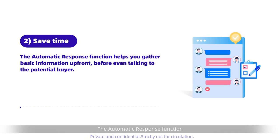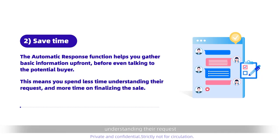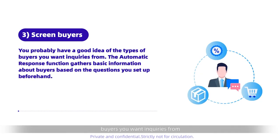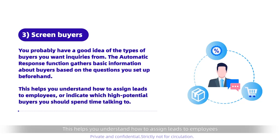Two, save time. The automatic response function helps you gather basic information up front before even talking to the potential buyer. This means you spend less time understanding their request and more time on finalizing the sale. Three, screen buyers. You probably have a good idea of the types of buyers you want inquiries from. The automatic response function gathers basic information about buyers based on the questions you set up beforehand. This helps you understand how to assign leads to employees or indicate which high-potential buyers you should spend time talking to.